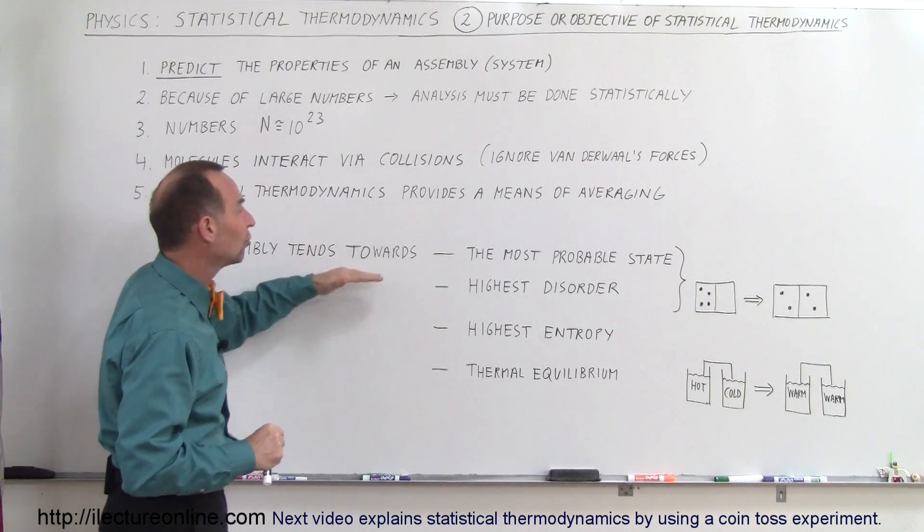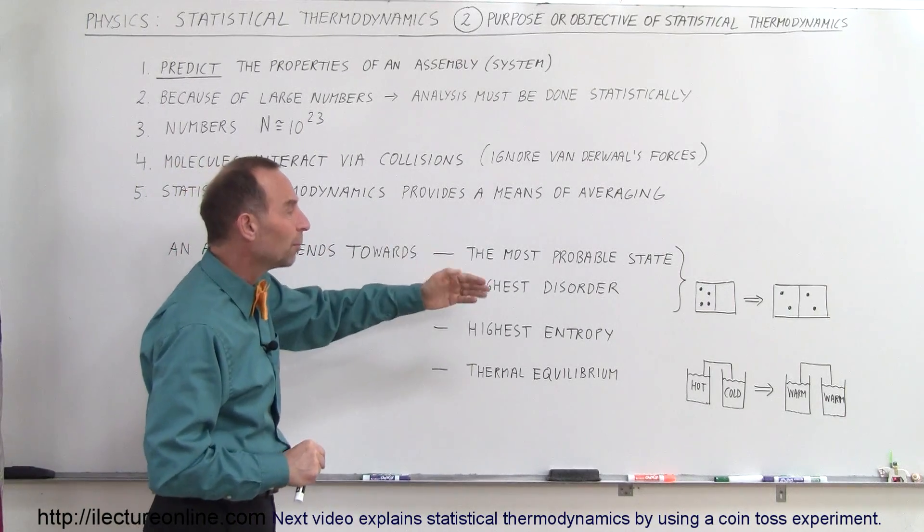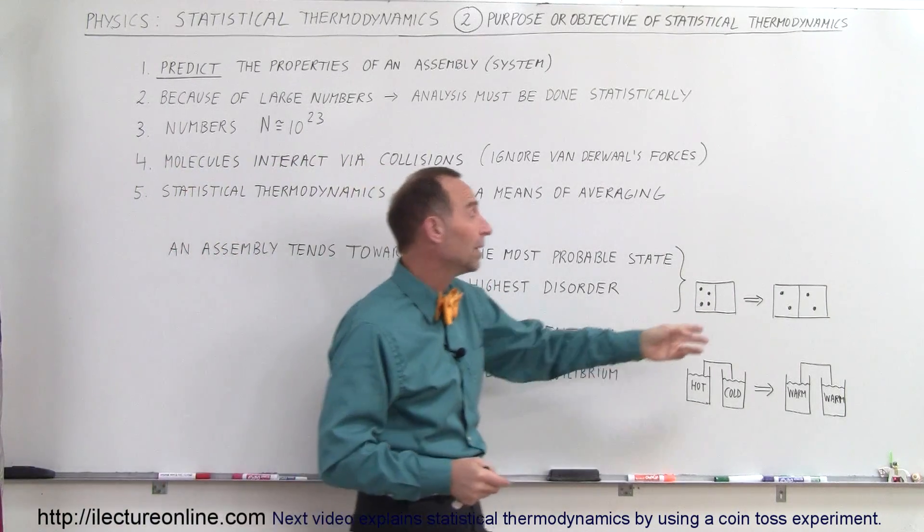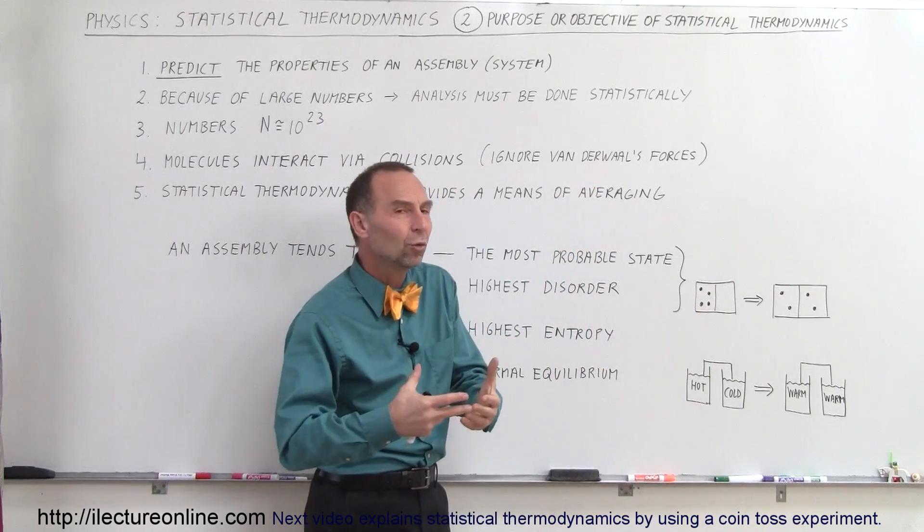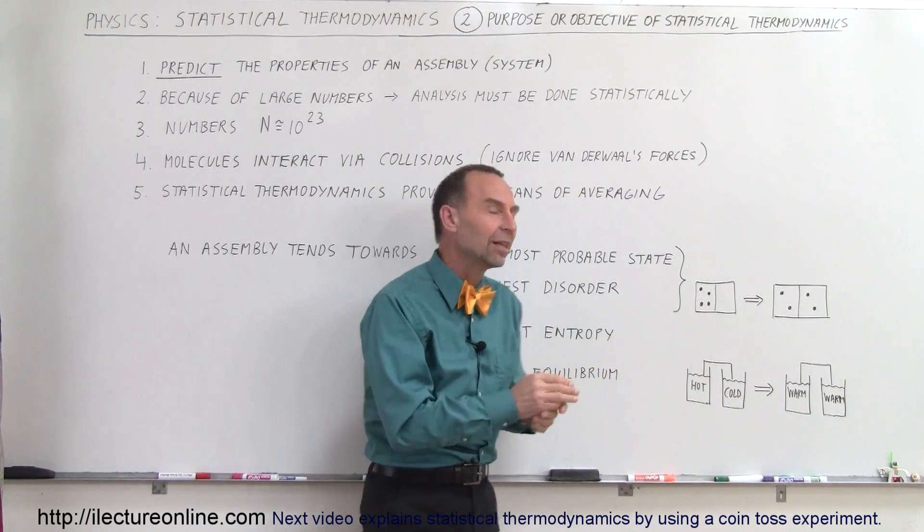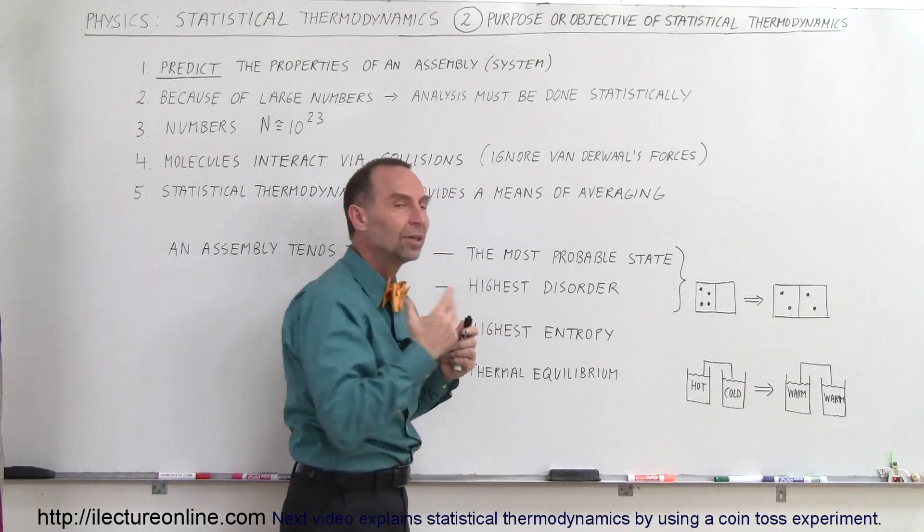The assemblies tend towards this order, the most probable state, and the most probable state would be that you have two in each one. That would be the greatest disorder and the most probable state. And that's why those two tend to go together.